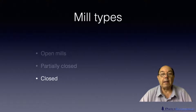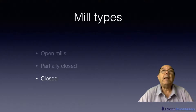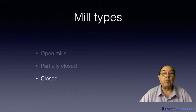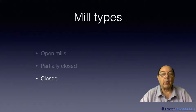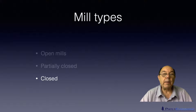And finally we have closed mills. Now a closed mill does not mean that it's no longer operating. It means it has absolutely no liquid effluent discharge. So it does bring in water and uses it in the paper making process, but it doesn't discharge anything.